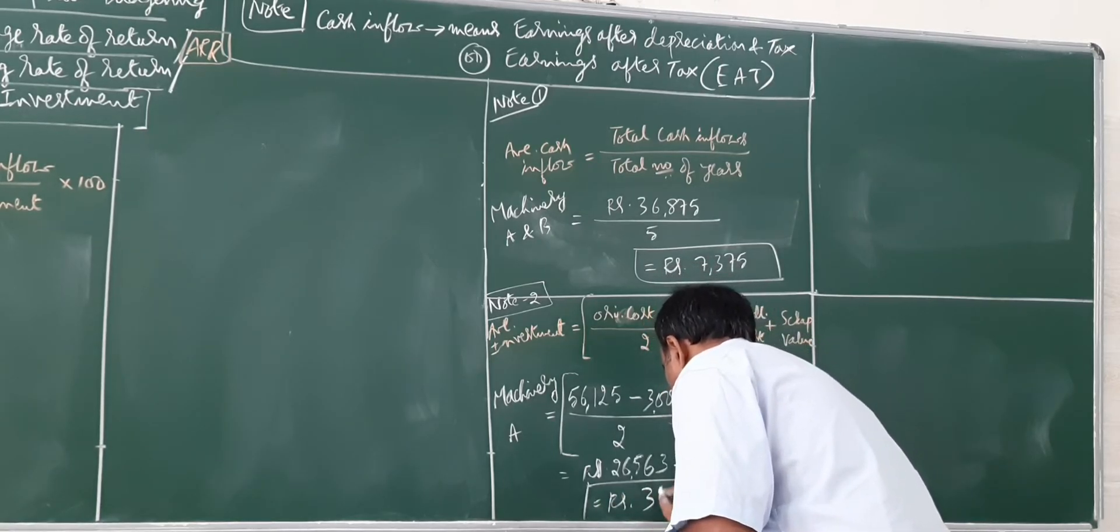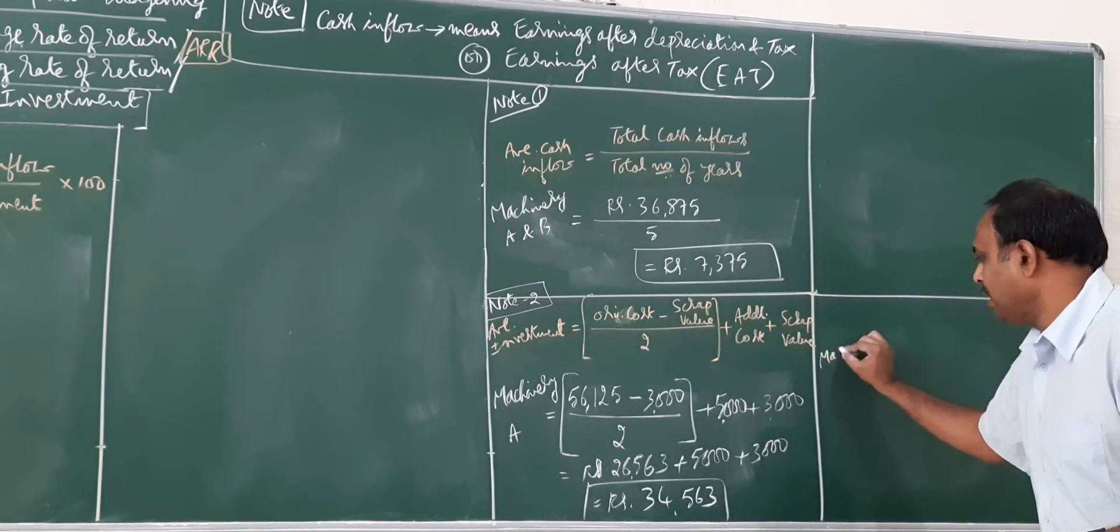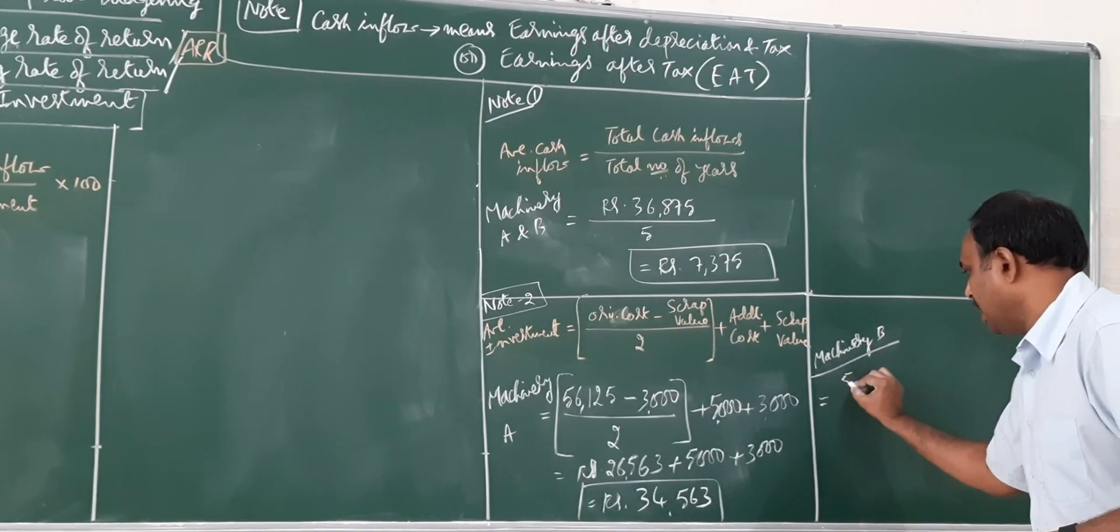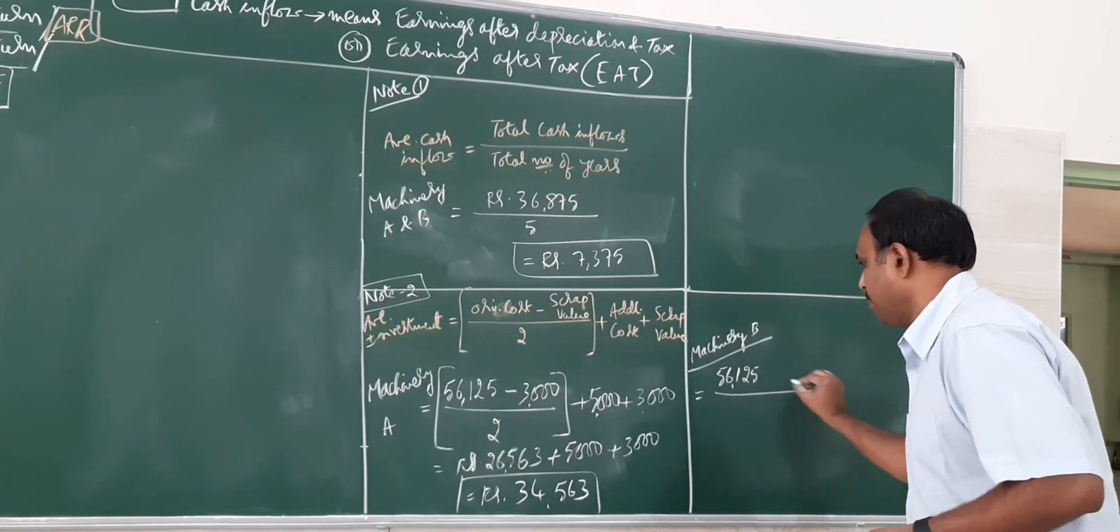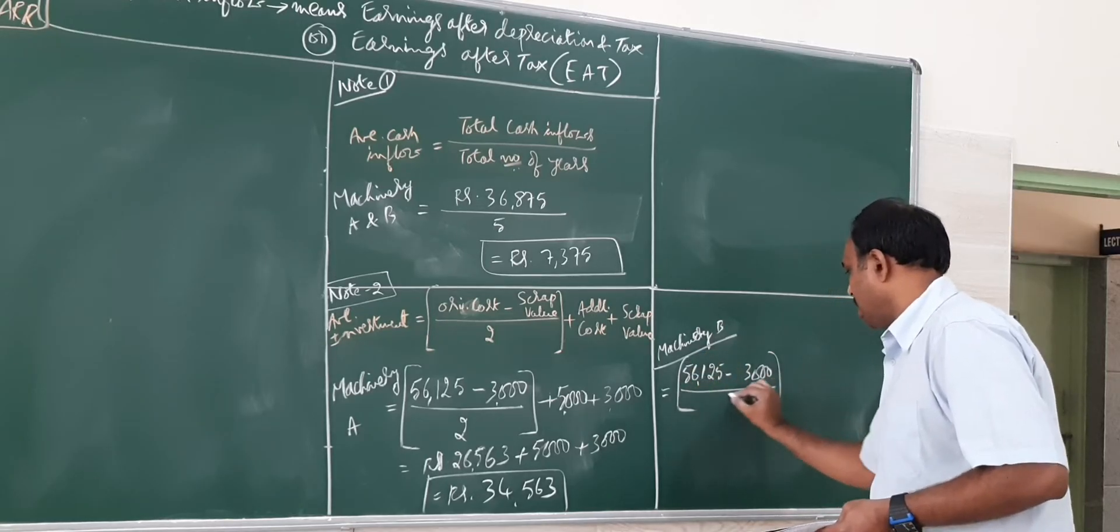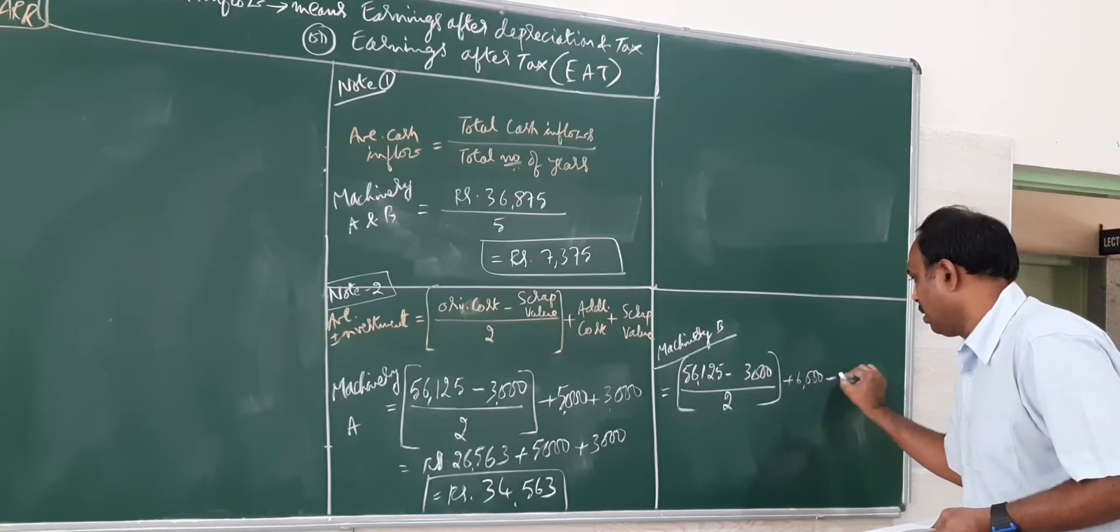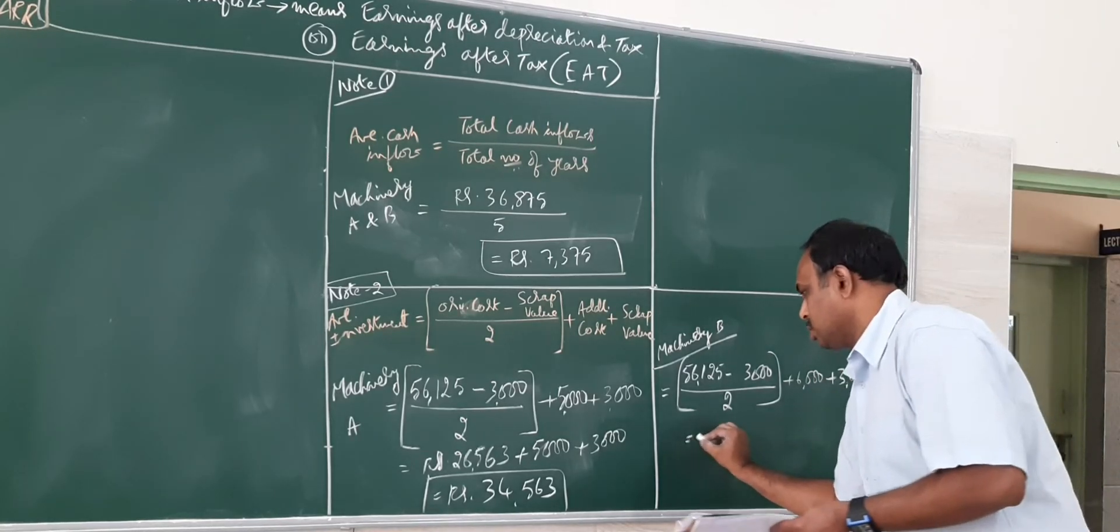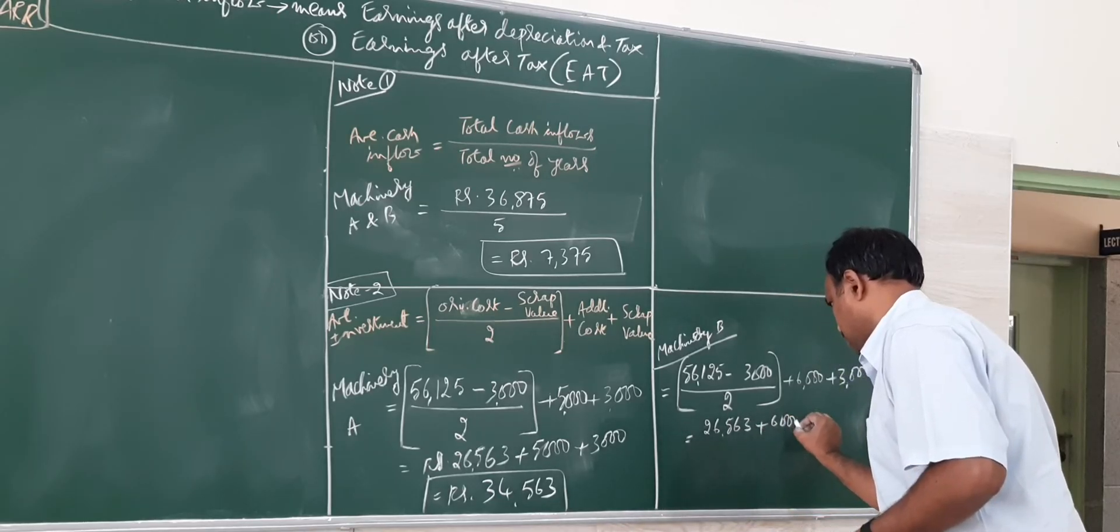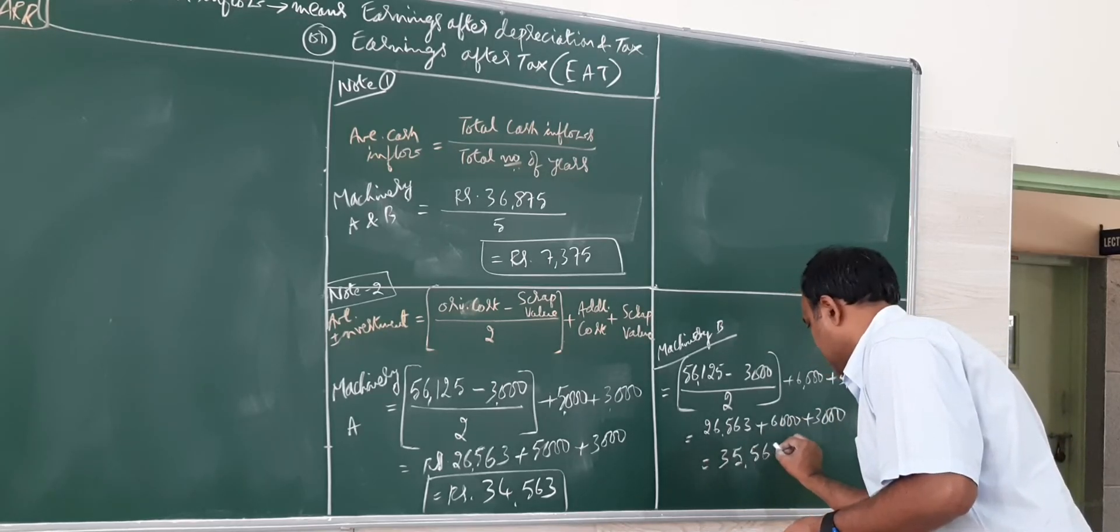So average here the investment comes to 34,563. Similarly, let me calculate now for machinery B. Again, 56,125 minus 3,000 divided by 2. But additional cost here is 6,000 plus 3,000. So here you are going to get 26,563 plus 6,000 plus 3,000. It comes to 35,563.